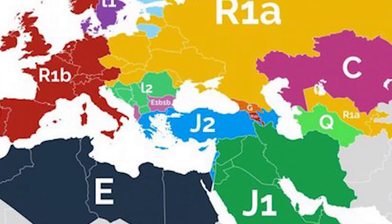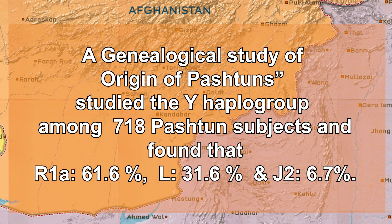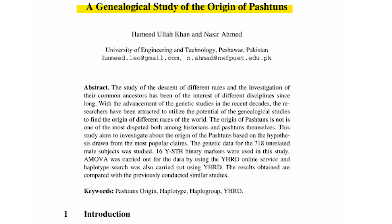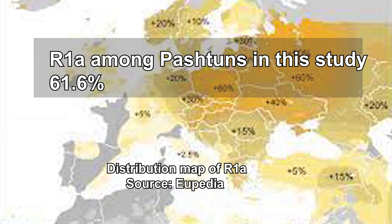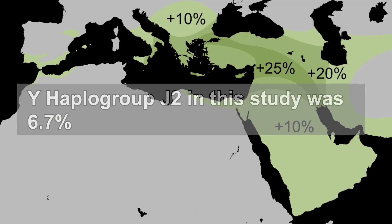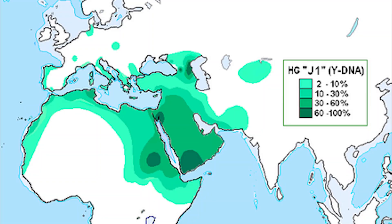Now let's look at the genetic history from the perspective of Y haplogroups. A study titled 'Genealogical Study of Origin of Pashtuns' studied 718 Pashtun subjects and found that R1a was around 61.6%, L was 31.6%, and J2 was 6.7%. An interesting point: none of the subjects tested positive for subclade J1, which is presumed to be an Abrahamic Y haplogroup considered a signature marker among descendants of Prophet Isaac or Prophet Ismail.